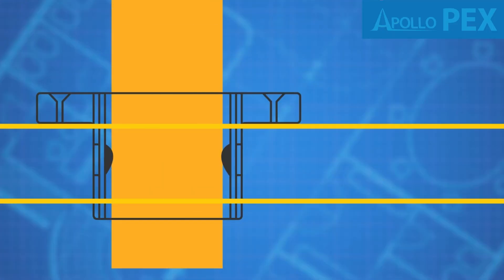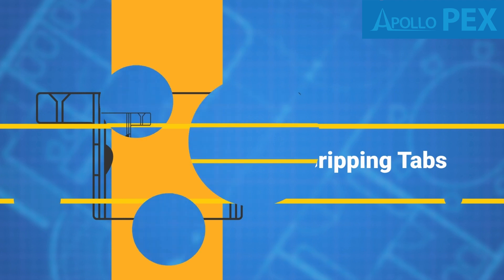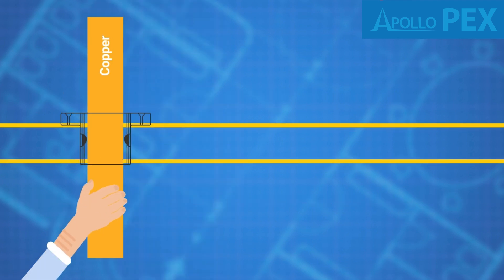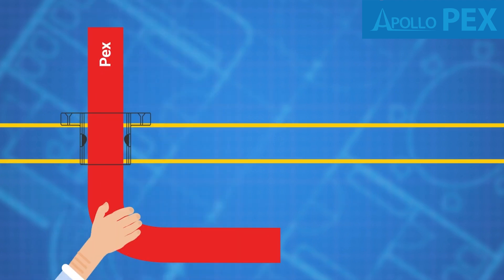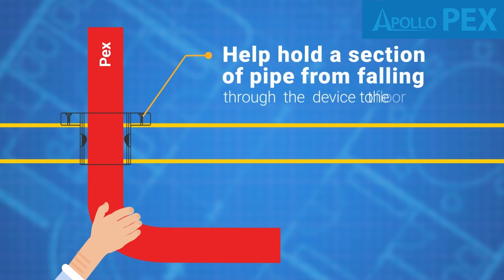The gripping tabs support the pipe from falling through while the flange, tight sleeve, and the material it's inserted into all help hold the pipe straight above the floor as it's being worked on below the floor.